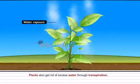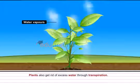Number seven, plants also get rid of excess water through transpiration.